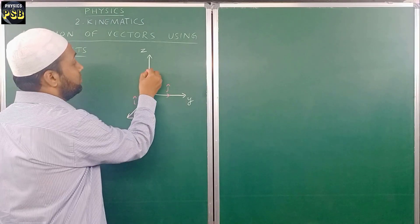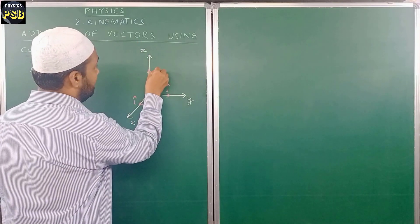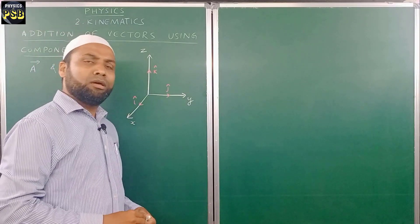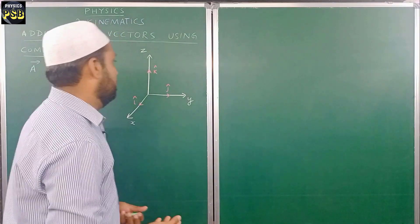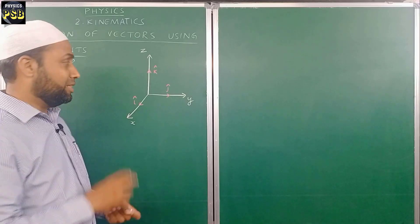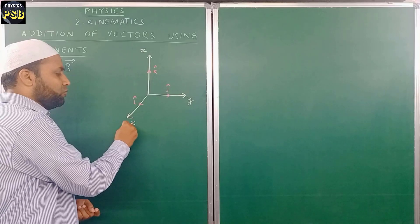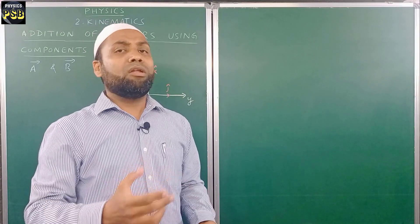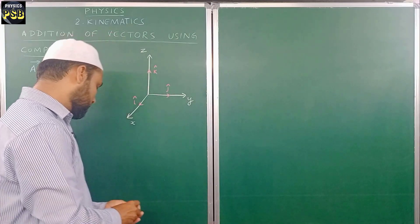And the unit vector which acts along the z-axis is nothing but k-cap. So these three vectors act perpendicular to each other. Now, the angle between y-axis and z-axis is 90 degrees, but the angle between x and y axes does not appear to be 90 degrees on the diagram. Then why do we say that they are mutually perpendicular to each other? There is a reason — let me explain.